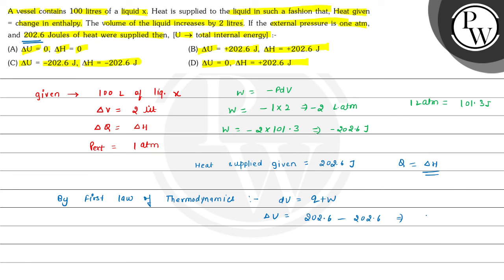The value of ΔU comes out to be 0, and the value of ΔH equals the value of Q, which is +202.6 joules. So the change in internal energy is 0 and the change in enthalpy is +202.6 joules. Therefore option D is the correct choice for this question. Hope you understood it well. All the best and thank you.